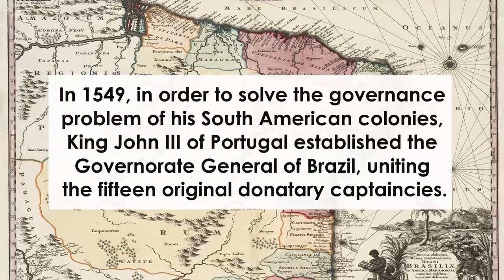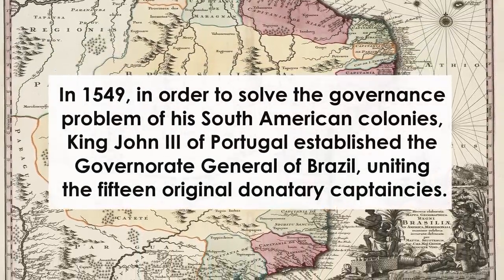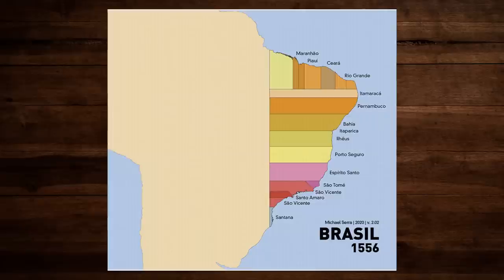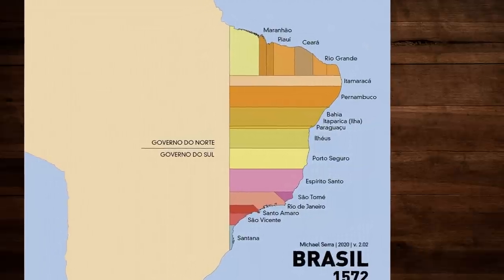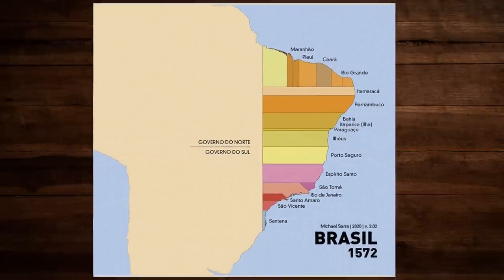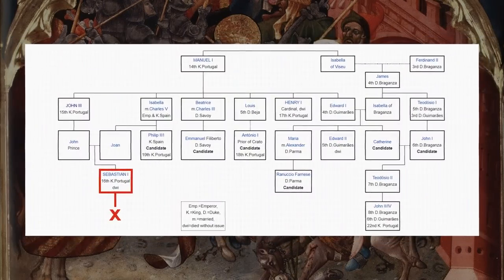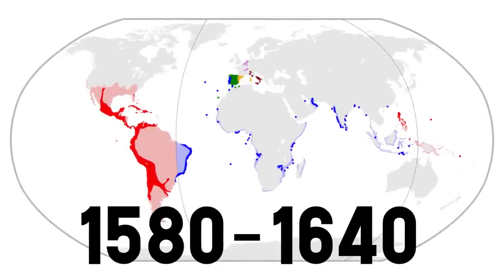In 1549, the general government was established, perhaps to provide some control and monetization by the crown over the captaincies, and that is where our gif starts. The territory had some small administrative changes but stayed pretty much the same until 1572, when the northern and southern governments were created, dividing the captaincies in two — but this division was then extinguished in 1577.